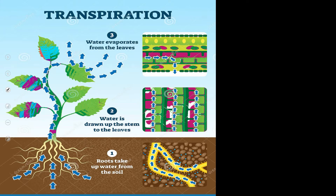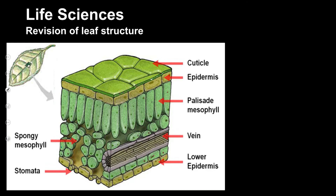In this lesson we are going to look at transpiration, which is how water is lost from the leaves of the plant. Where do the leaves get the water from? Water is given off through transpiration, and it comes from the water in the soil, moving into the roots, up the stem, and then into the leaves. To understand this, you need to remember what a leaf looks like, so we're going to revise the inside structure of a leaf.